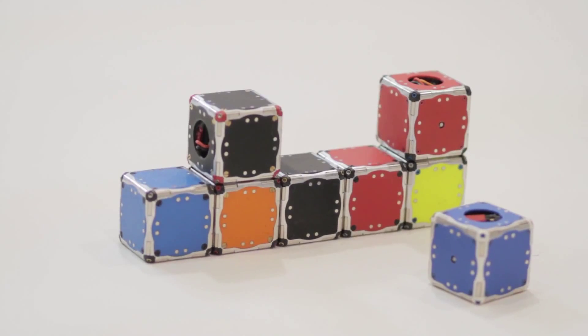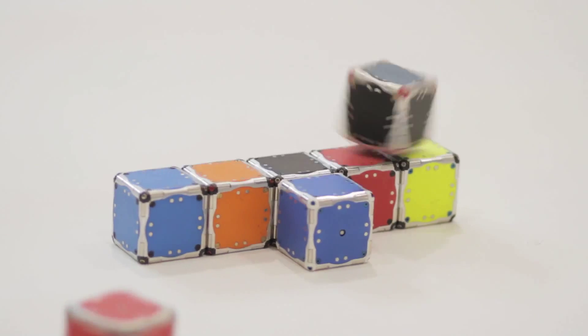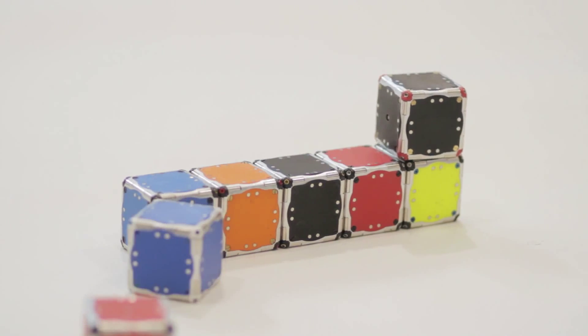However, we wanted a simpler approach that uses fewer actuators, fewer moving parts and was easier to implement on a lot of different robots. And so the approach that we chose is to use angular momentum. Essentially what that means is there is a spinning mass that spins inside of the robot.